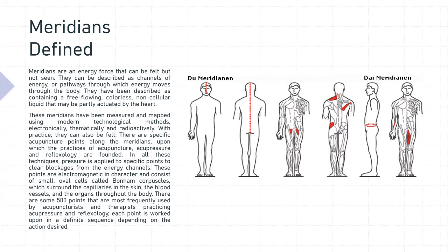There are some 500 points that are most frequently used by acupuncturists and therapists practicing acupressure and reflexology, and each point is worked upon in a definite sequence depending on the action desired.